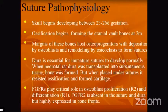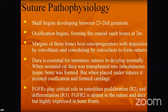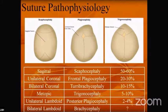The skull begins developing between the 23rd and 26th days of gestation. Ossification begins forming the cranial wall bones. The margins of these bones host osteoprogenitors, with bone deposition by osteoblasts and remodeling by osteoclasts to form sutures. These pictures show the central sagittal suture totally obliterated, representing sagittal scaphocephaly.